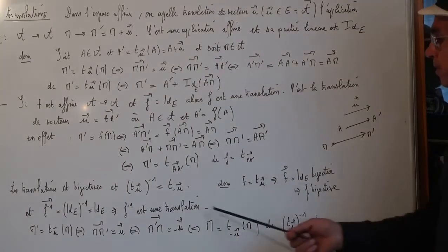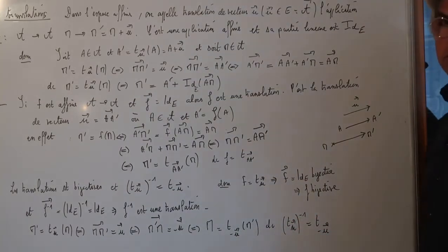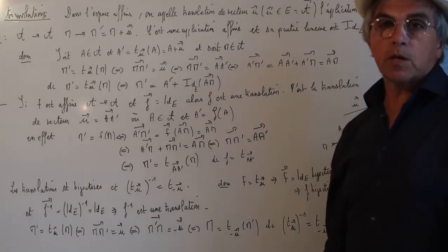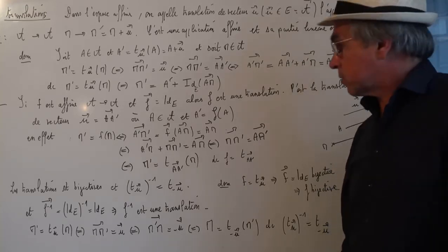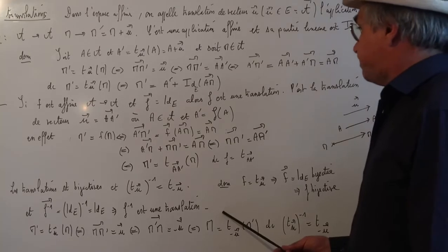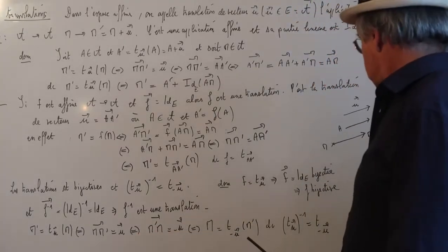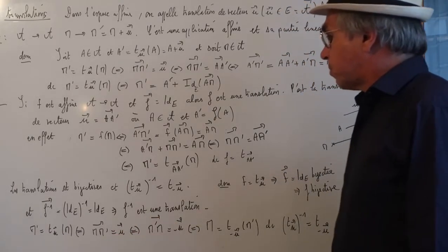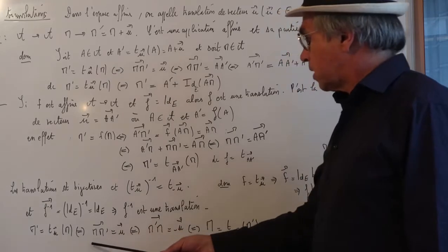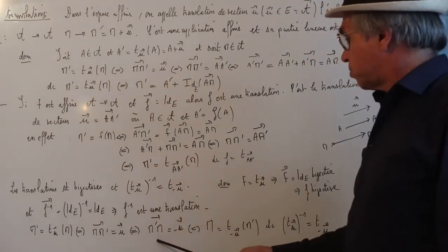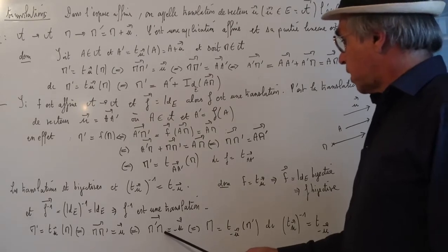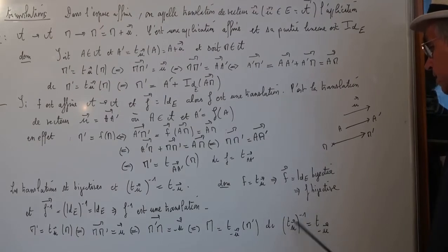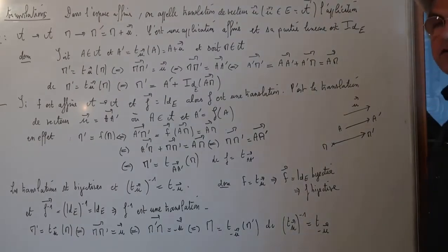Je sais que c'est une translation, mais je ne sais pas laquelle. Si je prends un point A quelconque, son image A', c'est la translation de vecteur AA'. Quelle est la réciproque ? M' égal T_U(M) équivaut à vecteur MM' égal U, et en prenant l'opposé, cela équivaut à vecteur M'M égal à moins U. Donc M est l'image de M' dans la translation de vecteur moins U. La réciproque de la translation de vecteur U c'est la translation de vecteur moins U.